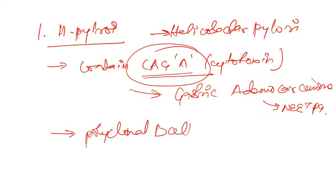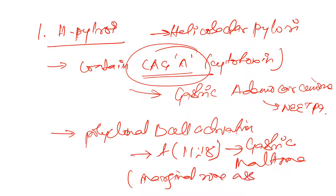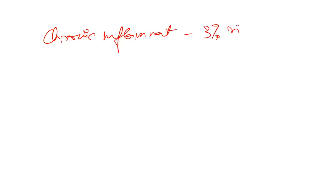Due to polyclonal B cell activation — overstimulation of B cells — there is translocation of chromosomes 11 and 18, which leads to gastric MALToma. Gastric MALToma is a marginal zone associated lymphoma. H. pylori also causes polyclonal B cell activation leading to translocation 11;18, further leading to gastric MALToma. Due to chronic inflammation from H. pylori there is a 3% risk of carcinoma.